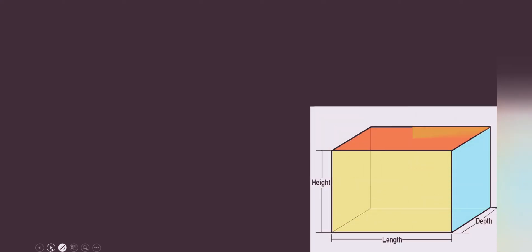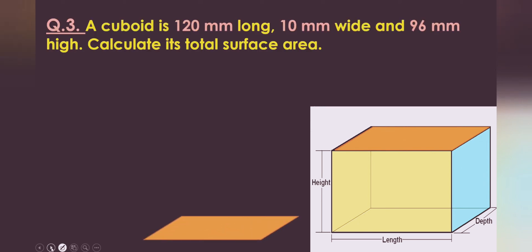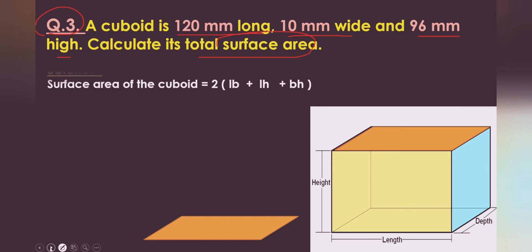Here is another problem. Pause the video and try to do it — if not, I can help you. Question 3: a cuboid is 120 mm long, 10 mm wide, and 96 mm in height. Calculate the total surface area. Write down the formula: surface area = 2(LB + LH + BH).